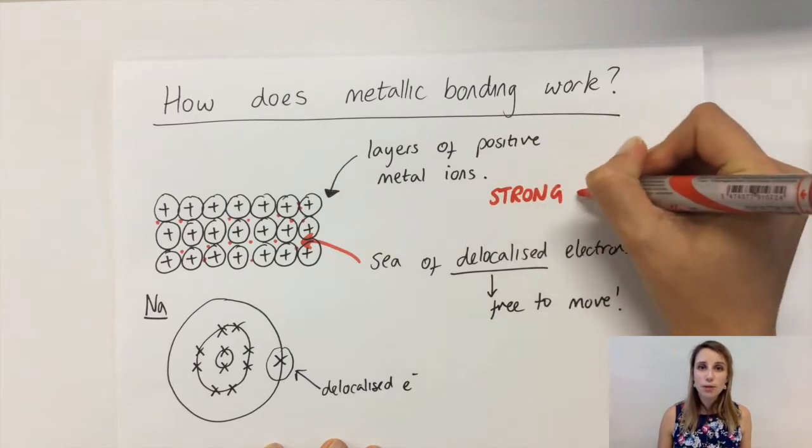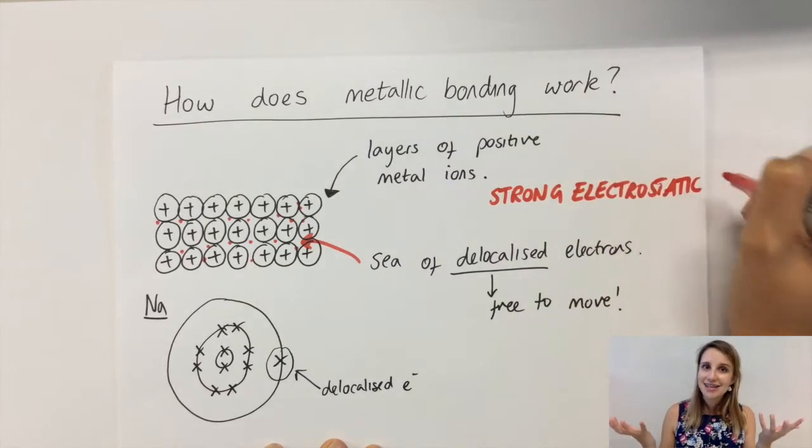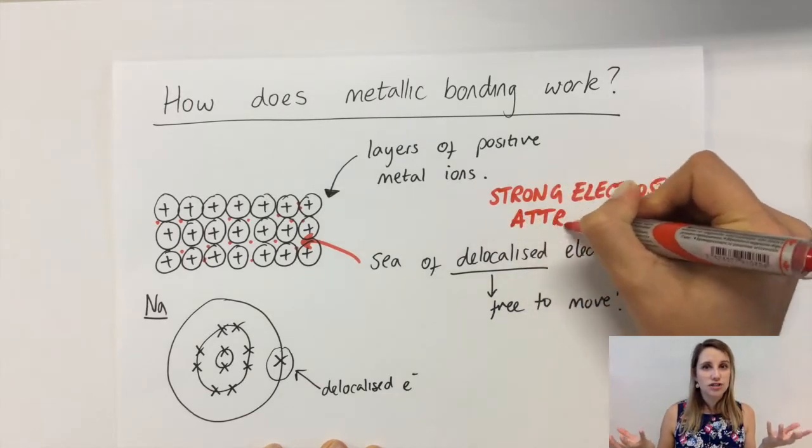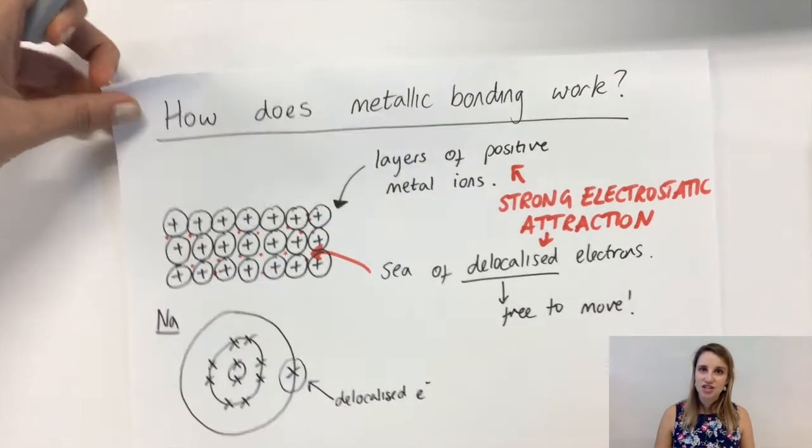In metallic bonding, you've got positive metal ions and negative delocalized electrons, but they're still attracted together with those strong electrostatic attractions.